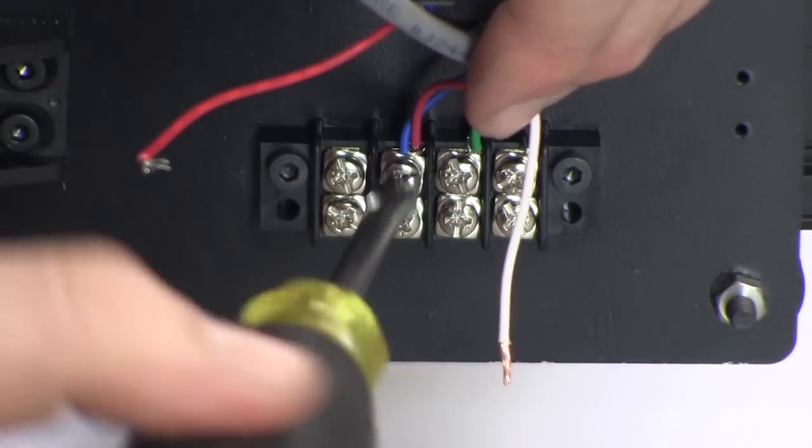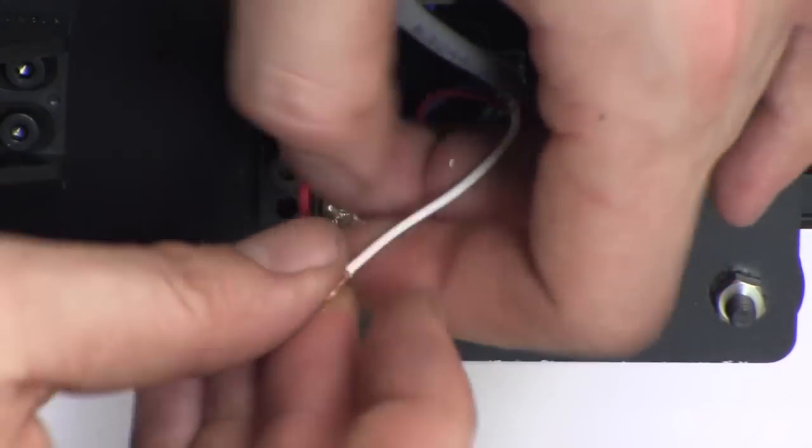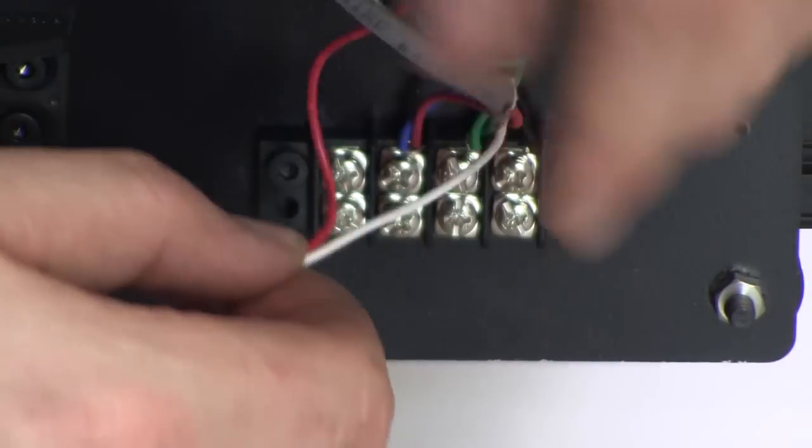We swap one pair of motor wires to ensure that the motors spin in different directions, thus moving the gantry in one direction.